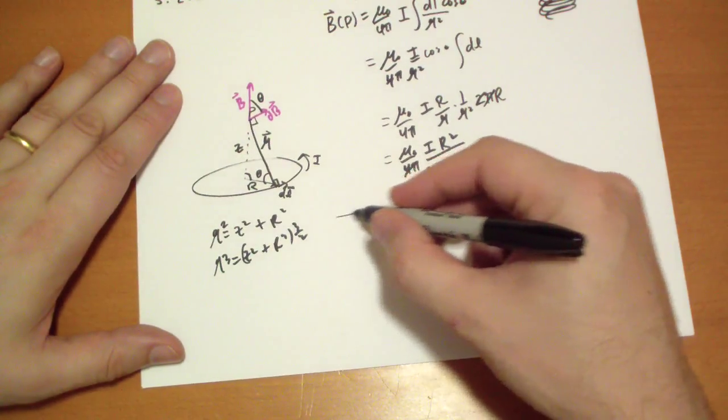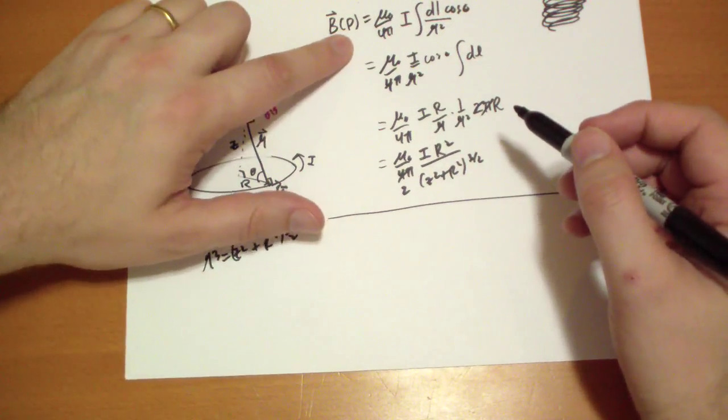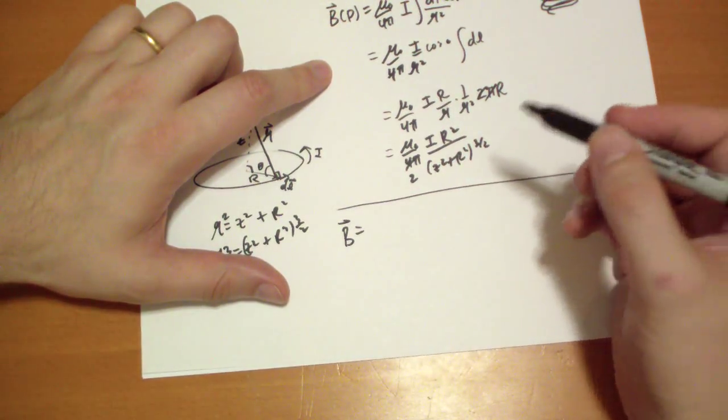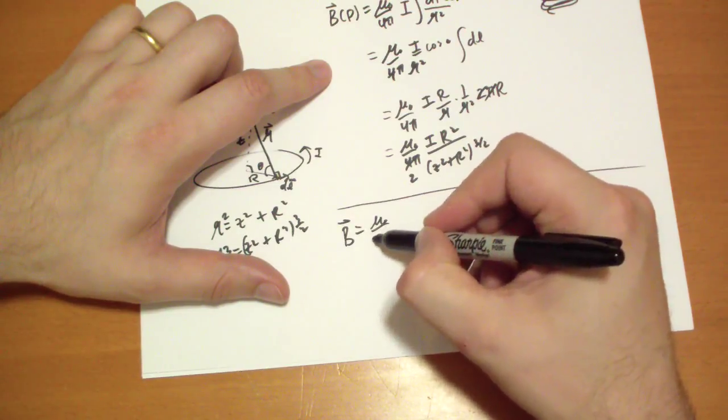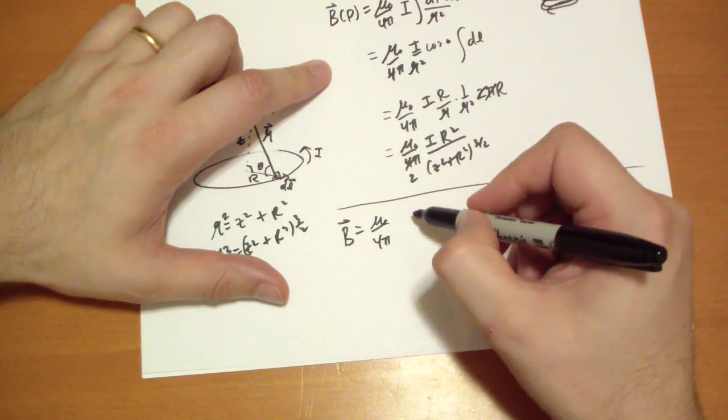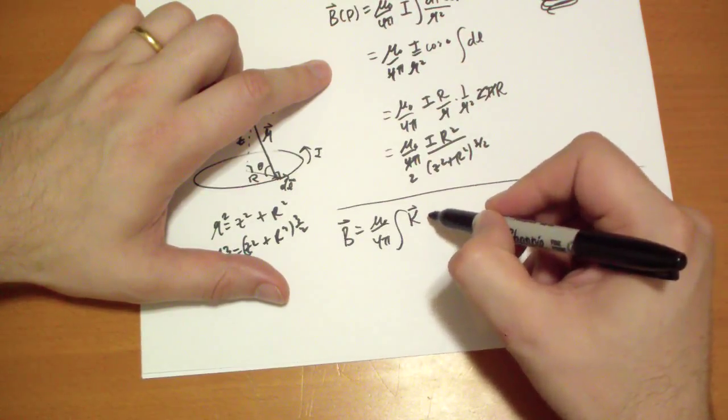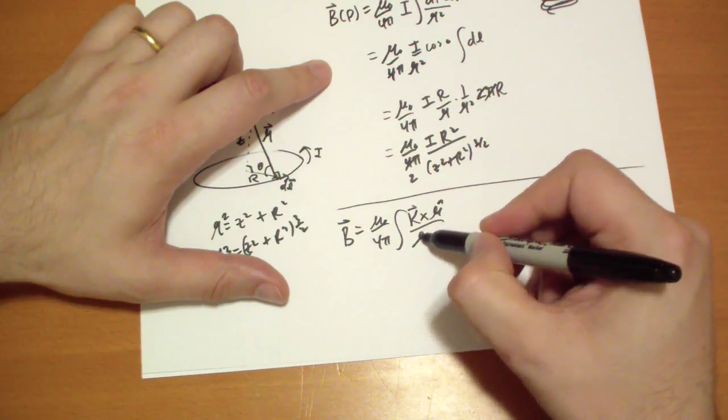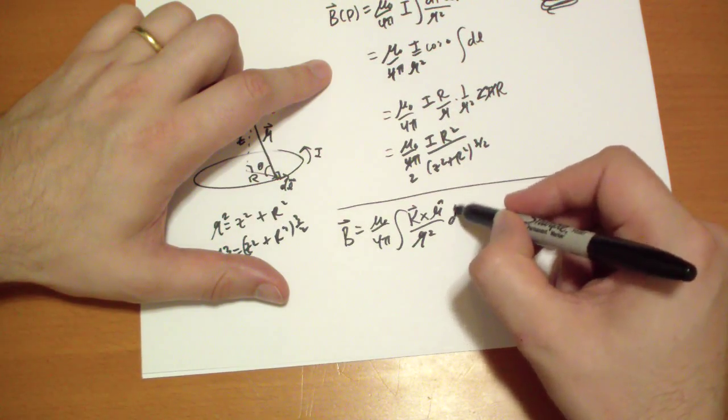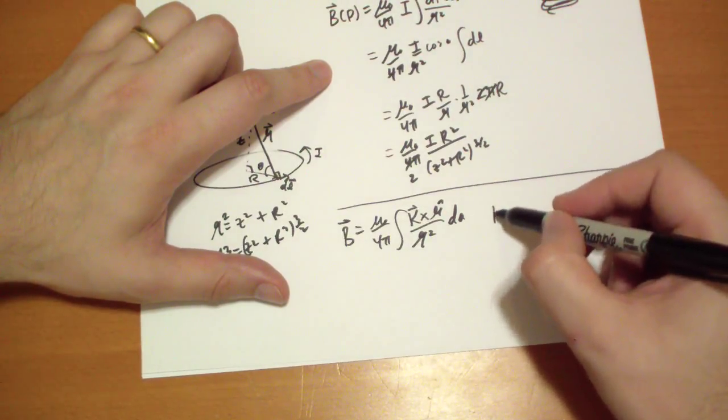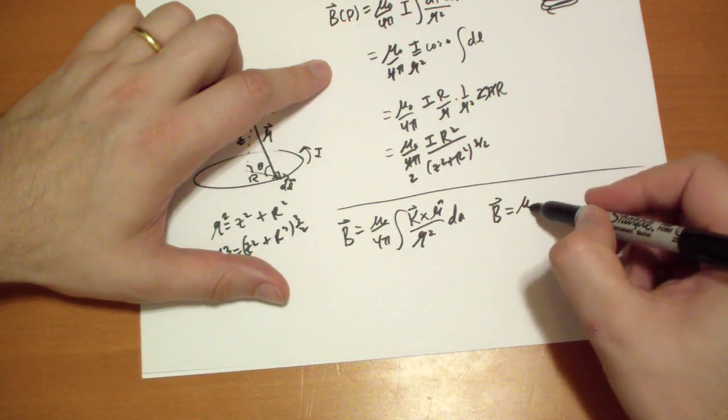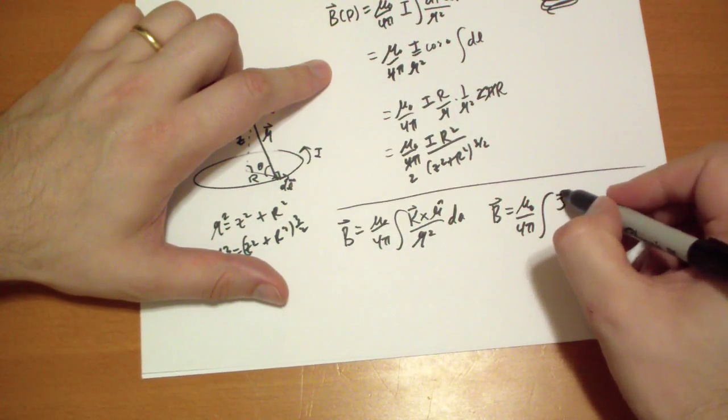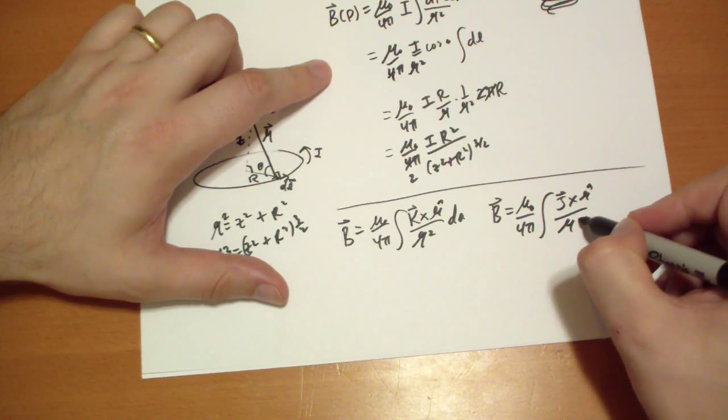Okay, wrapping up. Conclusion. So we had the Biot-Savart Law. There are similar laws that you can apply to surface current. It looks like this: integral of the k vector, the surface current, cross R hat over R squared times the area you're looking at. For volume currents, integral of the volume of J vector cross R hat over R squared.